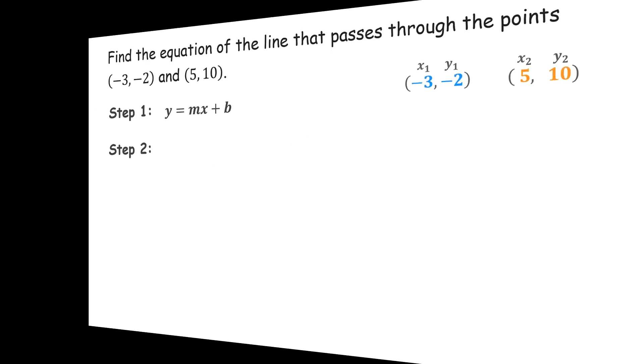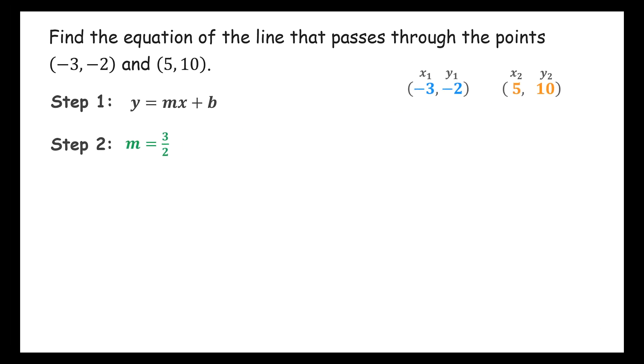So the slope is m equals 3 halves. Step 3: We find the y-intercept b. To do this, we substitute the slope m and either xy point into the slope formula y equals mx plus b, and then solve for b. Let's use the point 5, 10. This gives us x equals 5 and y equals 10.